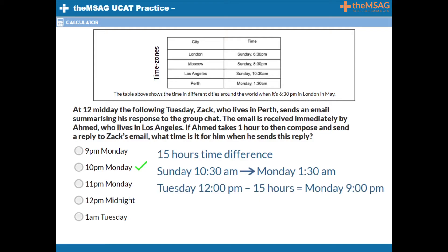Taking 12 hours away brings us to Monday at midnight, and taking away a further three hours brings us to 9pm on Monday. Ahmed receives the email at 9pm on Monday night. Don't rush to pick this as the answer, however, as Ahmed takes one hour to compose a reply. This brings us to 10pm on Monday night, which is the correct answer.